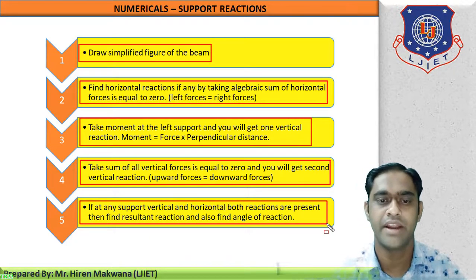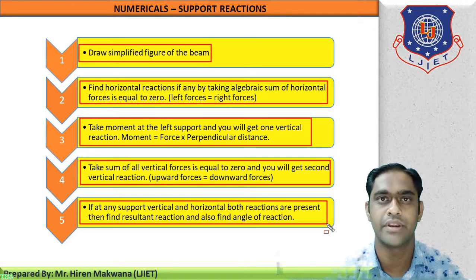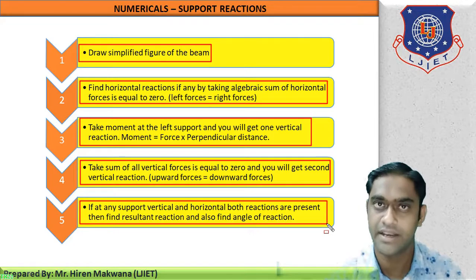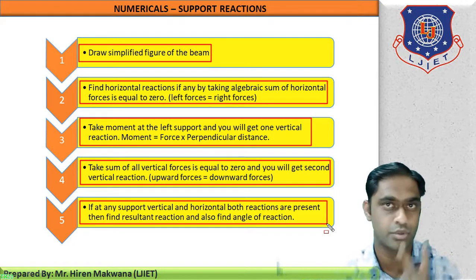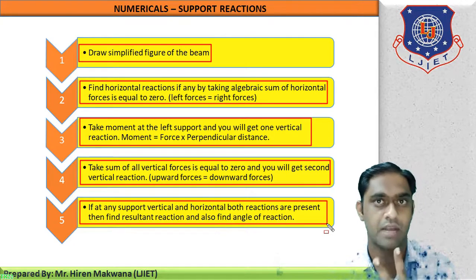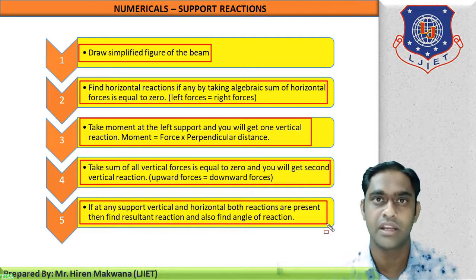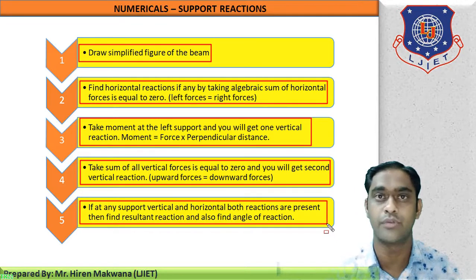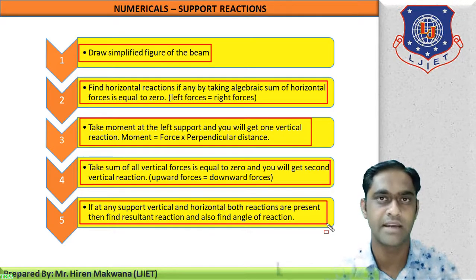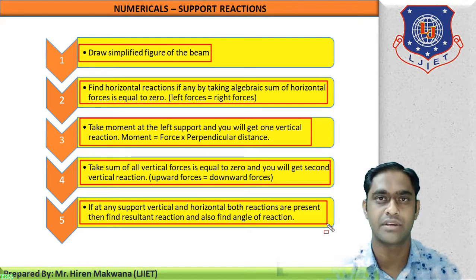Step number five: if at any support both horizontal and vertical reactions are present, find the resultant reaction and also find the angle of reaction. If at any support two reactions — horizontal and vertical — are present, you have to find the resultant reaction according to the formula, which we will see in the example, and also find the angle of reaction.